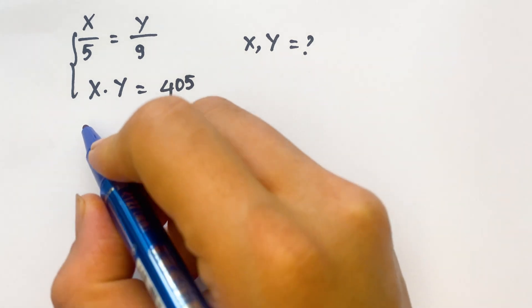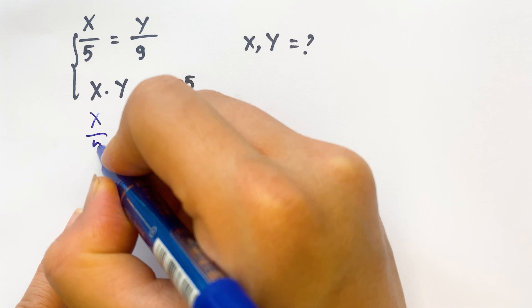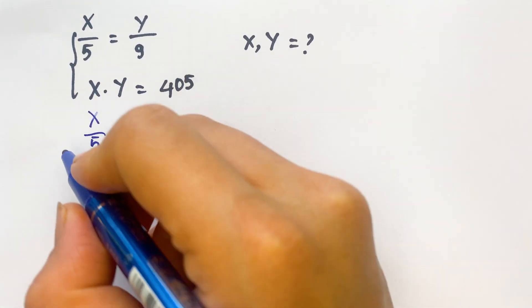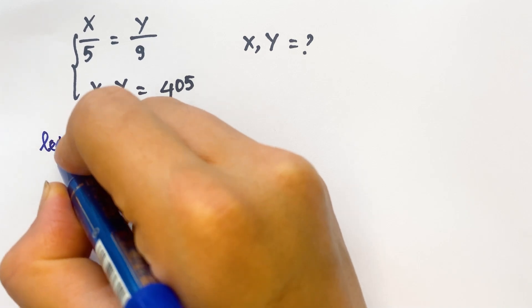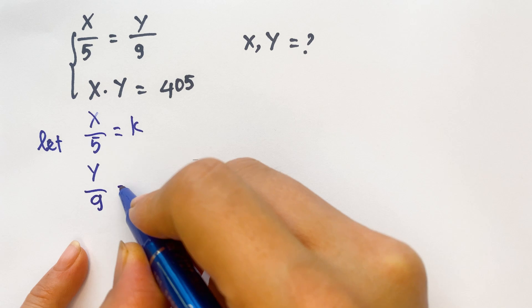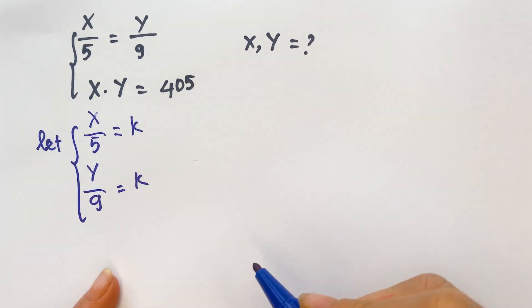So, firstly everyone can take x over 5 equals k. You can write like that. And y over 9 equals k.